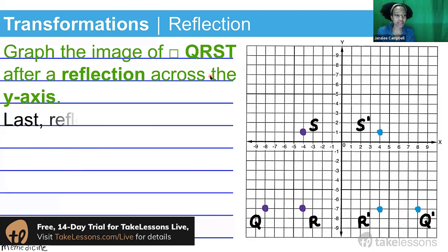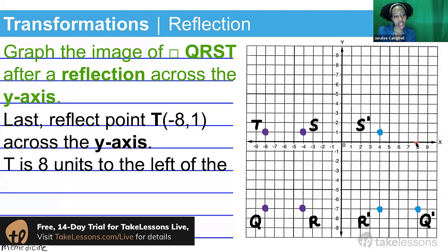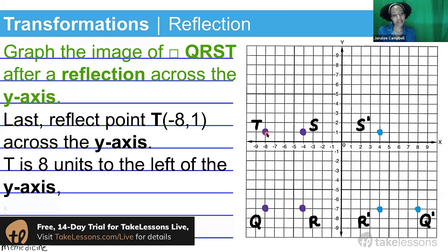Last but not least, we're finally at point T. Point T is located eight units to the left of the origin and one unit up. We're going to reflect it across the y-axis by shifting it equidistantly on the other side of the y-axis. So T is originally positioned eight units to the left of the y-axis. Now we're going to shift it so that it's reflected eight units to the right of the y-axis.